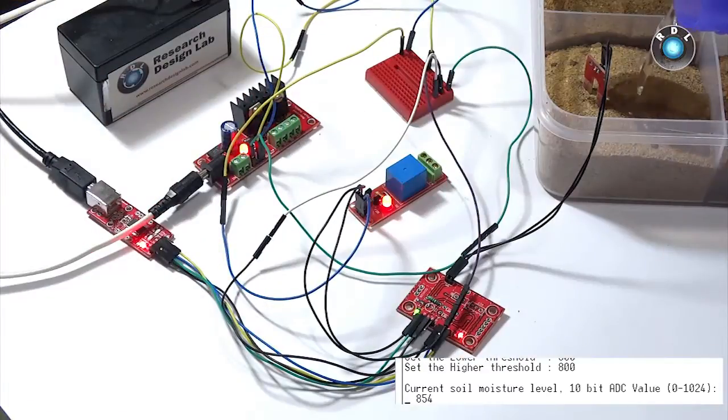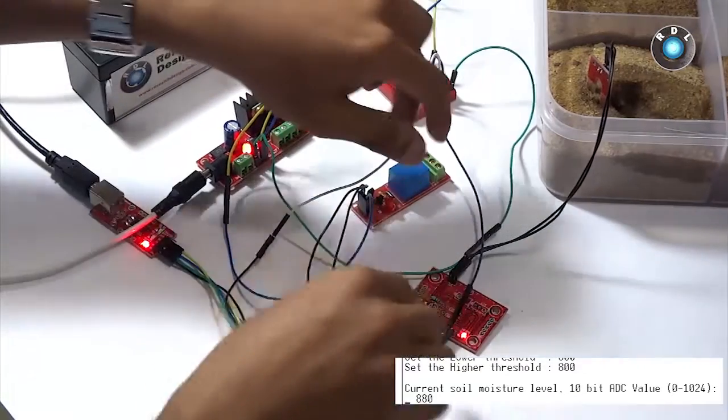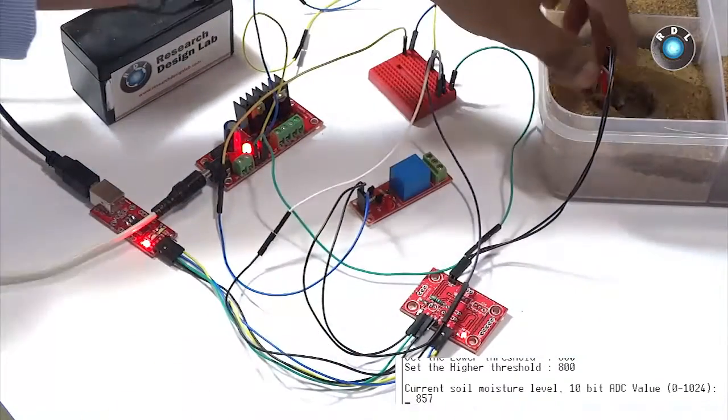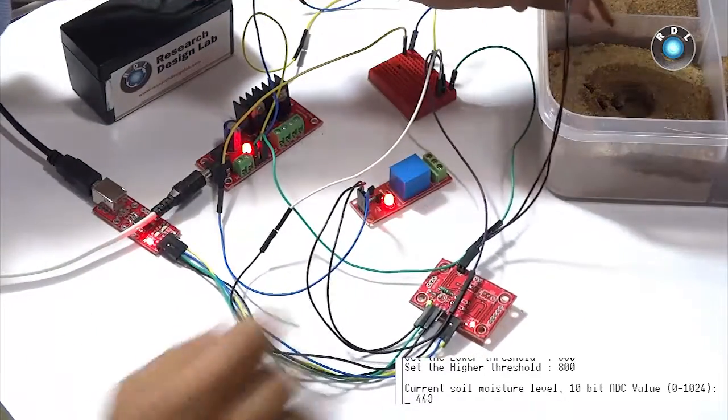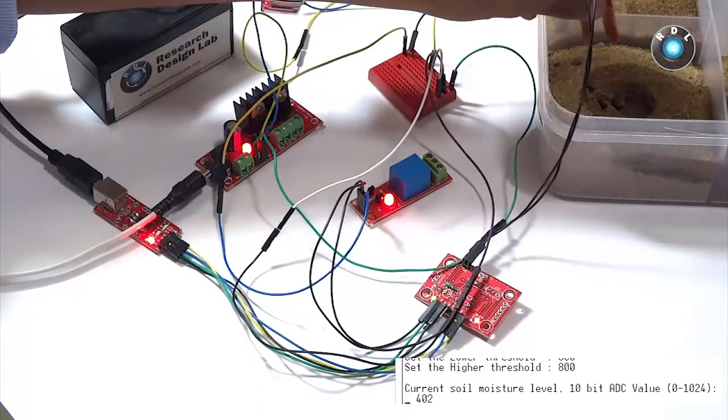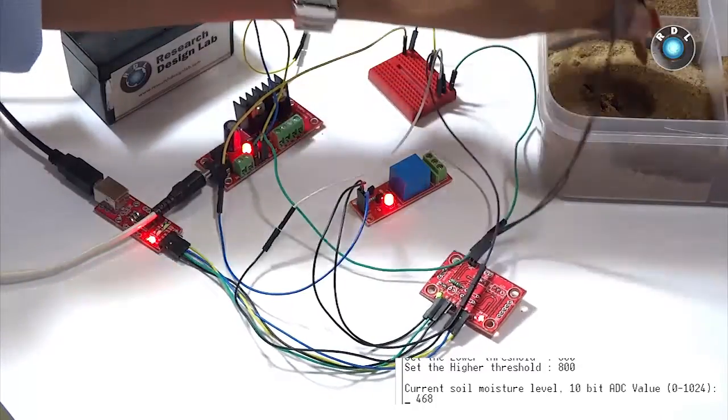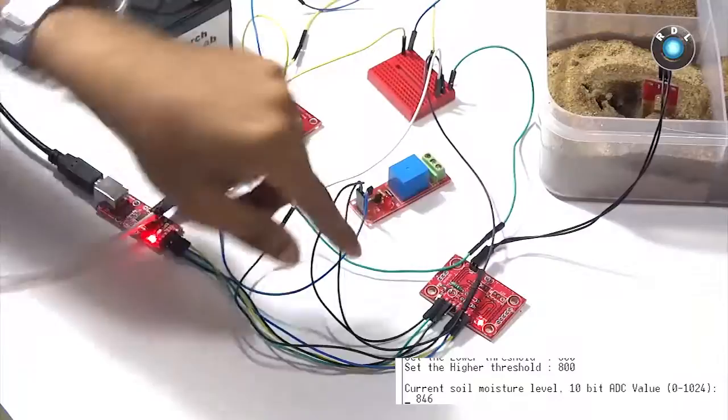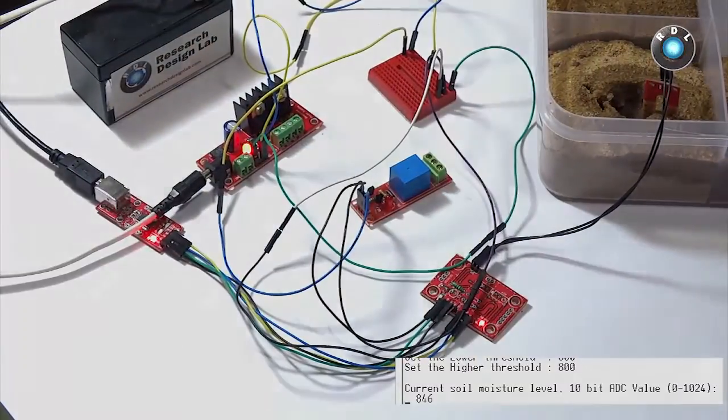Notice the relay turns off when the soil moisture value increases beyond 800. In fact, this is how we can interface a water pump to a relay instead of pouring water manually like I did. So basically, your water pump will remain on until the moisture content passes the higher threshold value. Thank you.